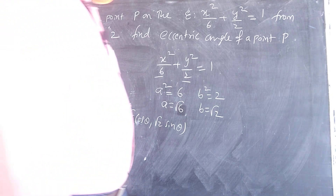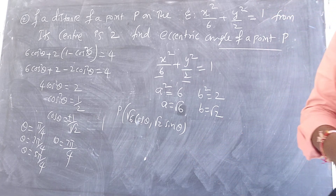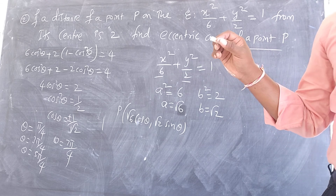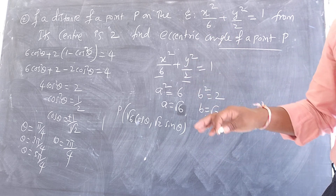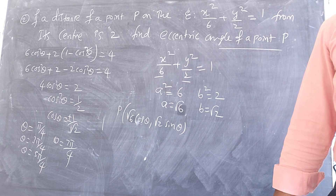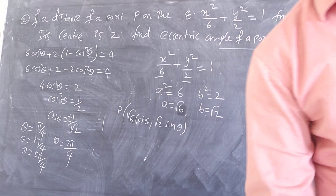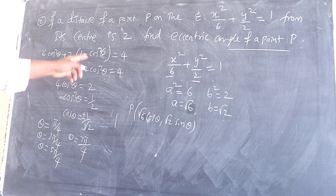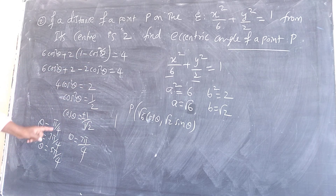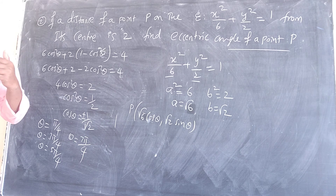There are 4 solutions for the eccentric angle: π/4, 3π/4, 5π/4, and 7π/4. This question can be asked in different ways — the number of solutions, or the sum of all eccentric angles. The eccentric angle is constrained to [0, 2π]; we should not go below 0 or exceed 2π.